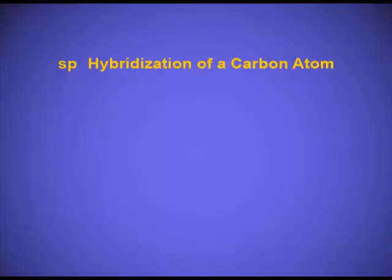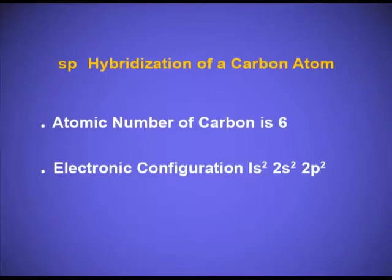Let's discuss SP hybridization in ethyne, that is SP hybridization of the carbon atom. Carbon has atomic number 6 and its electronic configuration is 1s2, 2s2, 2p2. This is the ground state electronic configuration.